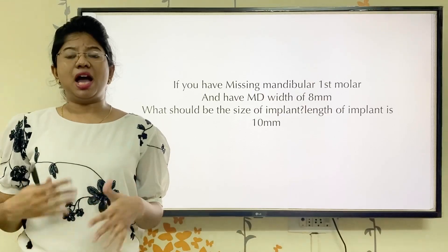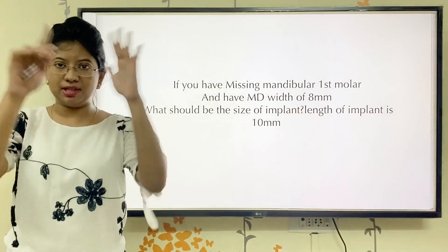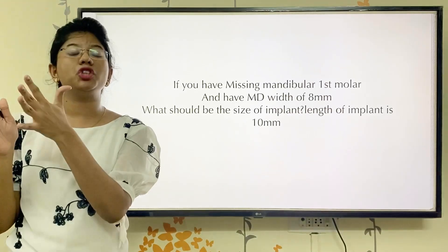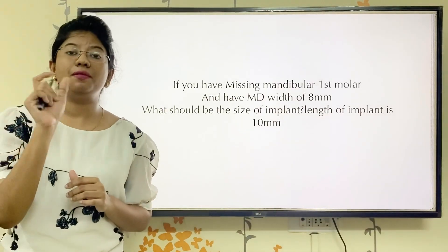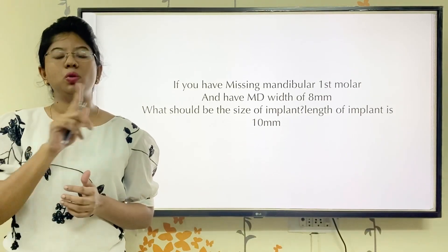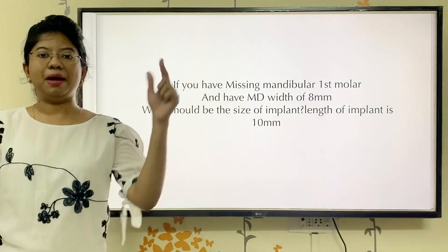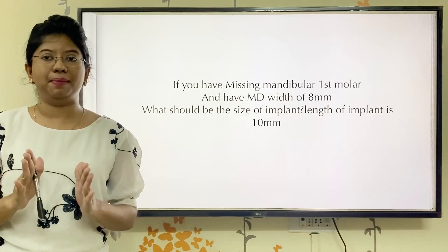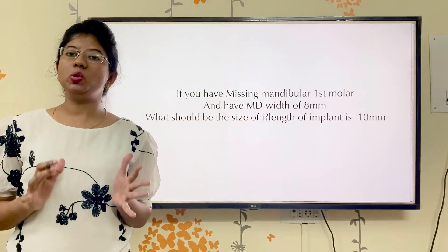At the end, here is a question. If you have a missing mandibular first molar, and the mesiodistal space of that missing first molar is 8 mm, how do you decide the width of the implant? As there is only one implant, you need to maintain a distance of 1.5 mm from both ends — that is 1.5 + 1.5 = 3 mm total. So you subtract 3 from 8, meaning you can place an implant of width 5 mm. Your implant size would be 5 by 10. With this example, you learn how to plan for implant sizing.